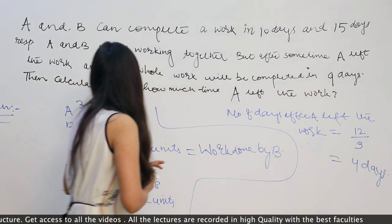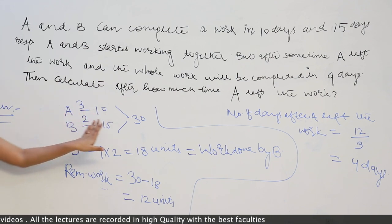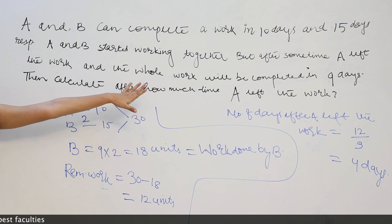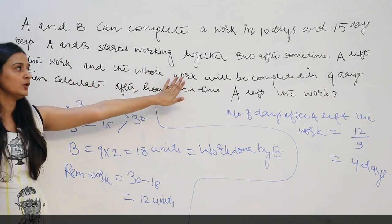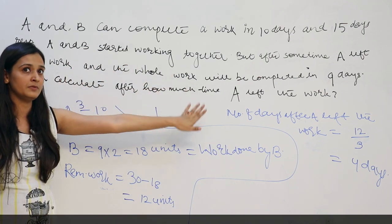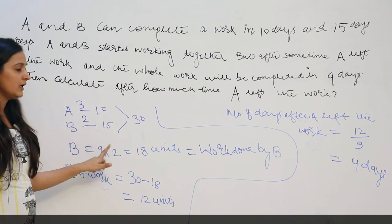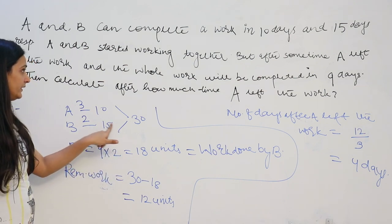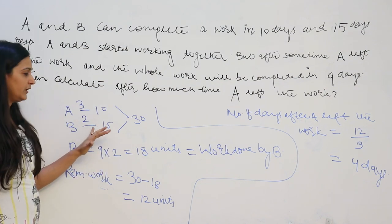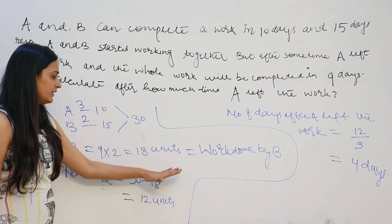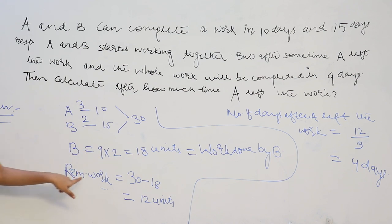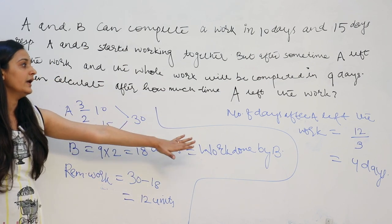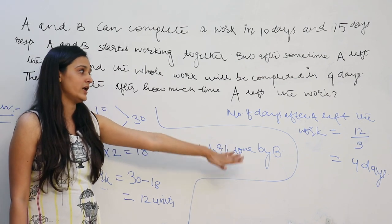To recap: A does work in 10 days, B in 15 days. Total unit of work = 30, efficiency of A = 3, B = 2. The work is completed in 9 days, so B worked for 9 days doing 18 units. Remaining 12 units done by A. A completed remaining work in 12 ÷ 3 = 4 days. So A left after 4 days. That is the answer.